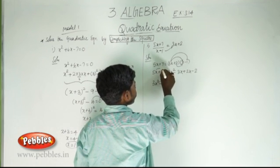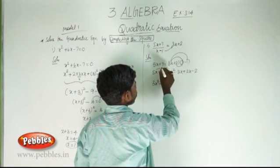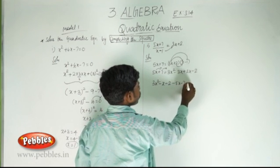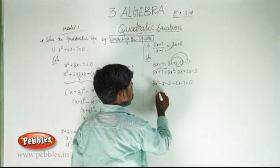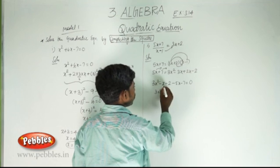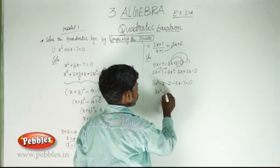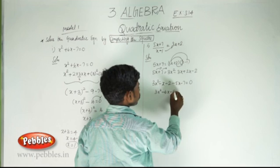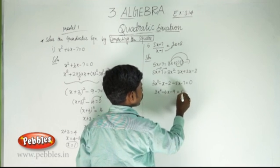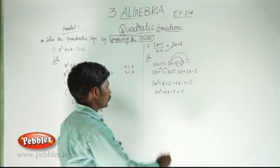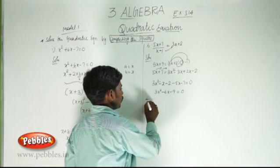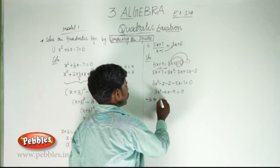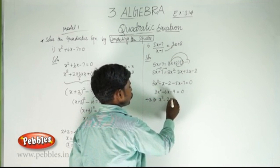Writing in order: 3x squared minus 3x plus 2x is minus x, minus 2. Then plus 5x plus 7 transferred to the RHS gives minus 5x minus 7 equal to 0. So 3x squared minus x minus 5x is minus 6x, and minus 2 minus 7 is minus 9, equal to 0. Dividing by 3, that gives x squared minus 2x minus 3 equal to 0.